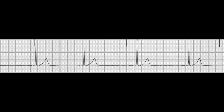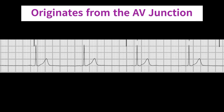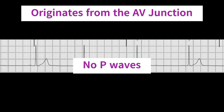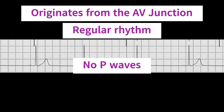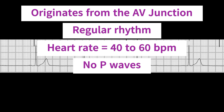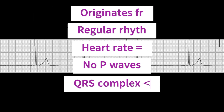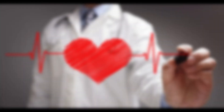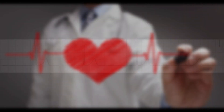To summarize, a junctional rhythm is a type of cardiac arrhythmia that originates from the AV junction of the heart. It is characterized by an absence of P waves, a regular rhythm with a heart rate of 40 to 60 beats per minute, and a normal QRS complex. Thank you for watching, and we will see you in the next video.